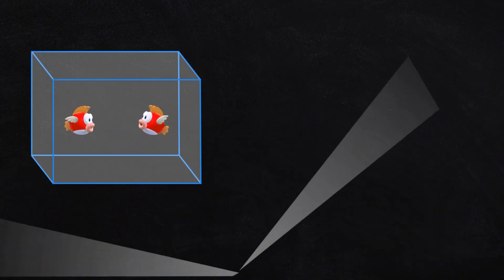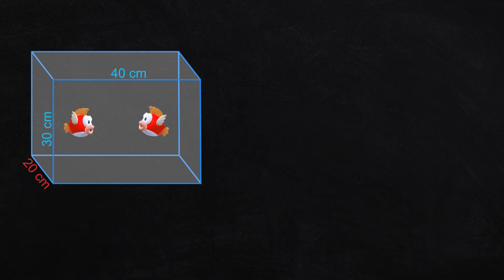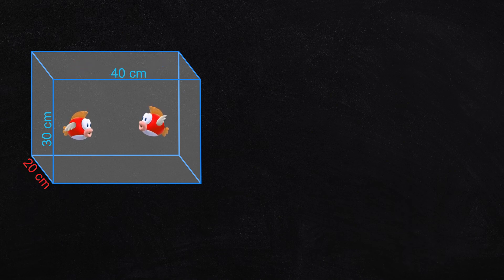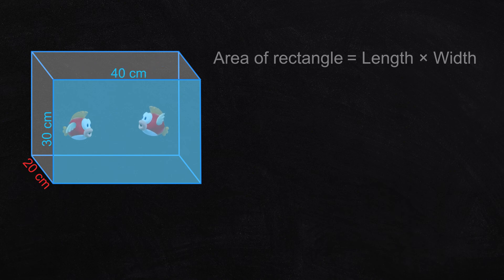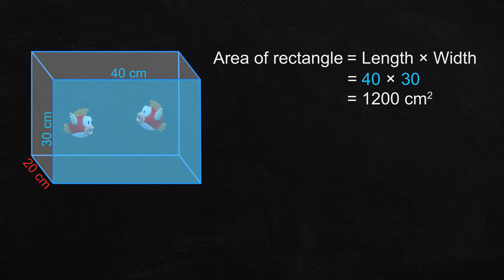Let's work out the volume of this rectangular prism. The front and back are rectangles of the same shape and the same size. First we calculate the area of this rectangle. The rule is: area of rectangle equals length multiplied by width. That's 40 centimeters multiplied by 30 centimeters, which is 1,200 square centimeters.